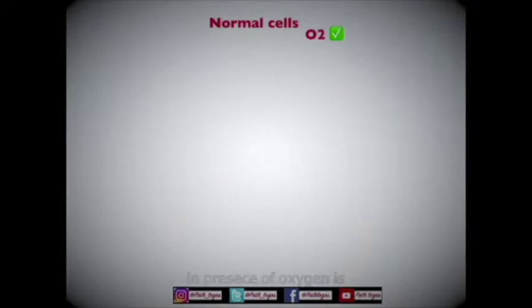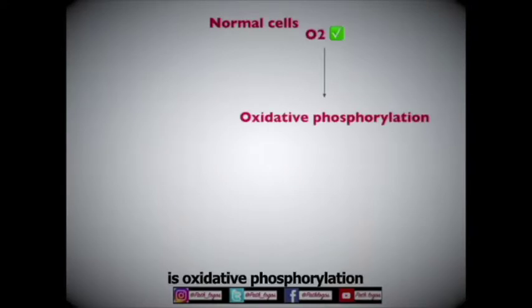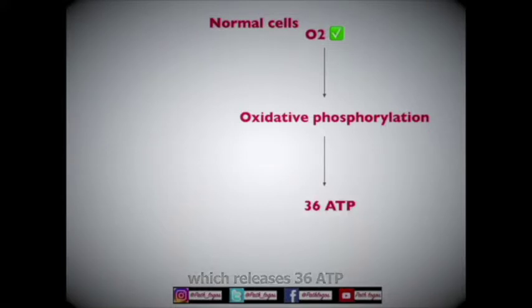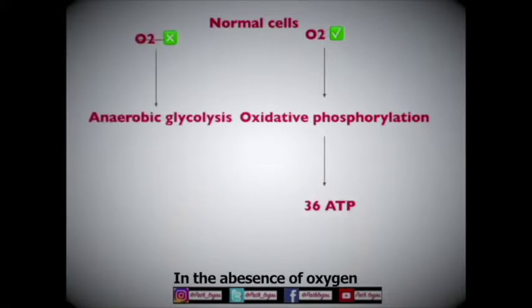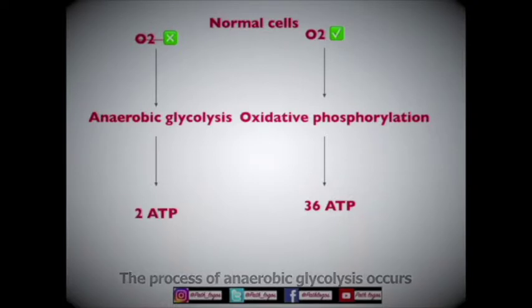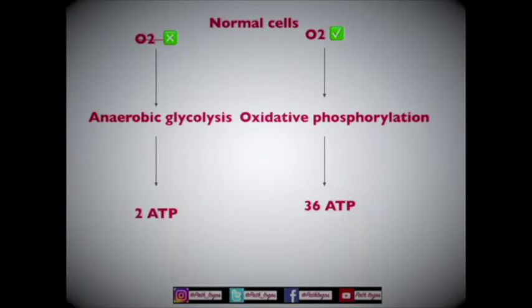In a normal cell, the source of energy in the presence of oxygen is oxidative phosphorylation, which releases 36 ATPs. In the absence of oxygen, the process of anaerobic glycolysis occurs, which releases only 2 ATPs.